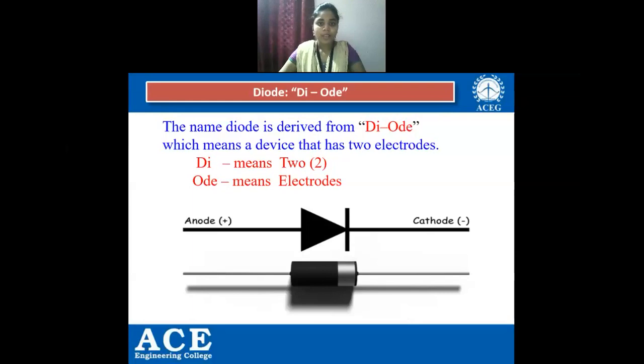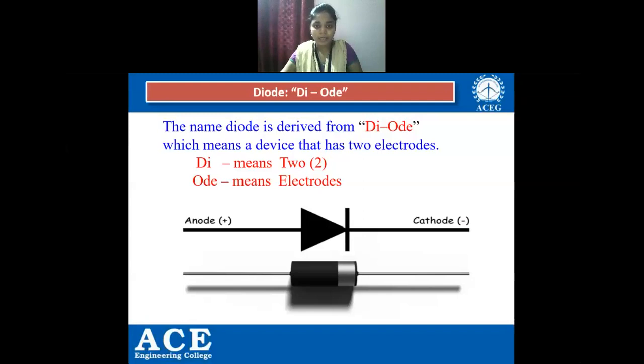A diode is a simple two-terminal electronic device. It allows current to flow only in one direction and blocks current that flows in the opposite direction. The two terminals of the diode are called anode and cathode. The name diode is derived from 'di-ode,' meaning a device with two electrodes — 'di' means two and 'ode' means electrode.